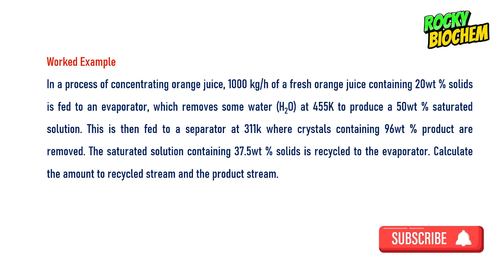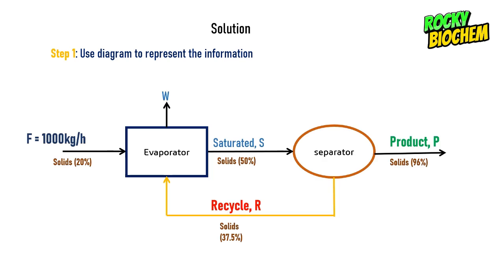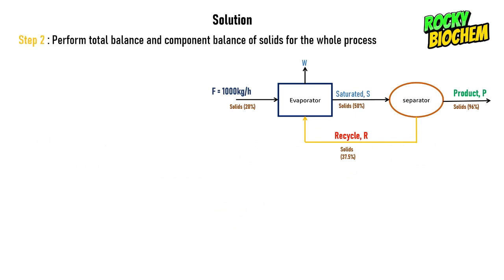So this is the question. Let's go through the solution step by step. The first thing you have to do is use a diagram to represent the information given in the question. We were given the feed to be equal to 100 kg per hour. We were also given the solid components in the feed to be 20%, the recycle stream to be 37.5%, the saturated stream to be 50%, and the product to be 96%. Take very good note of the direction of the arrows, especially for the recycle stream — it must move from the separator back to the evaporator.